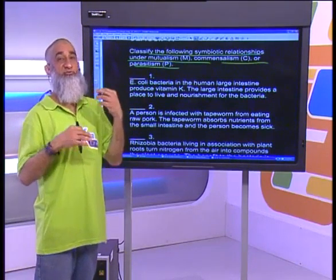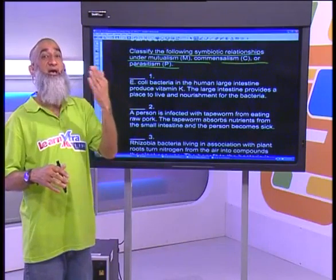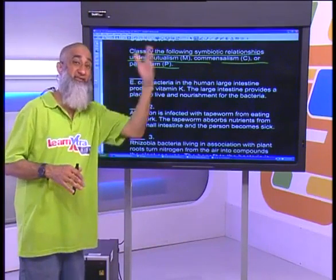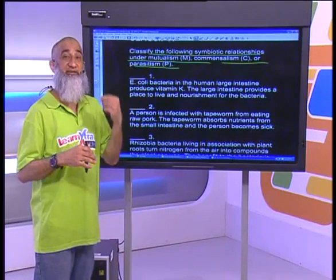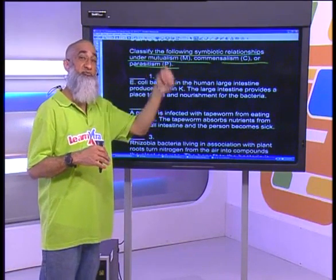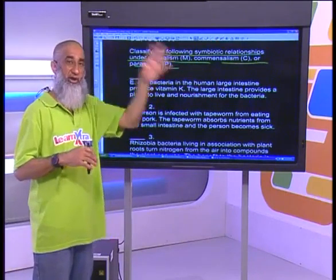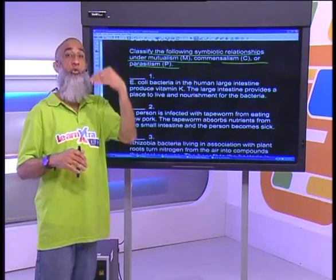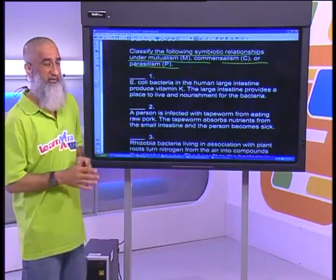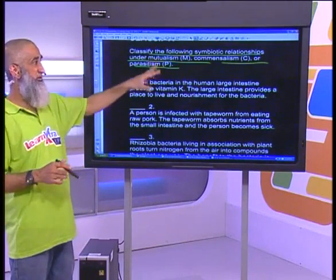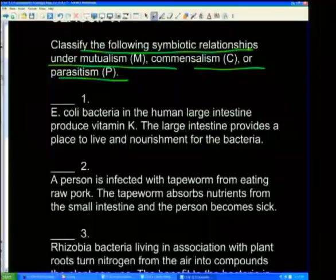In an exam, they could give you diagrams of examples and ask you to name them and explain the relationship between them. Or they could ask you to differentiate between commensalism and mutualism, or commensalism and parasitism, or any one of them, with examples — three to six marks each, about nine marks total. Here we're only asking you to identify, in this particular case.